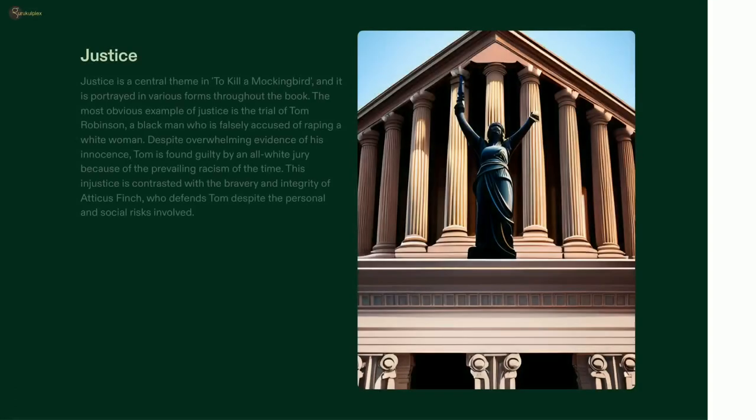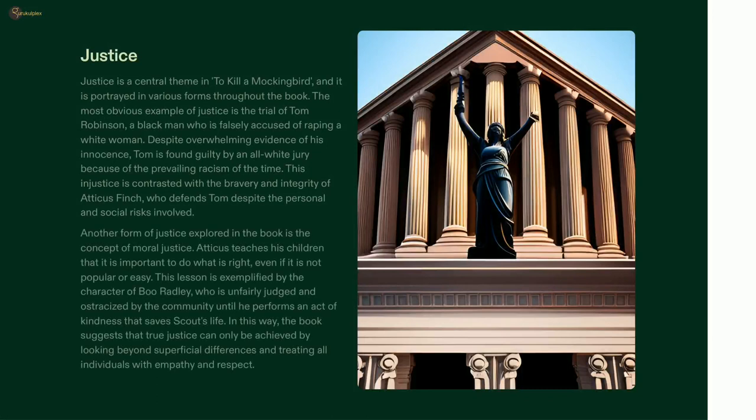Atticus Finch in To Kill a Mockingbird exemplifies the importance of justice as he defends Tom Robinson, a wrongly accused black man. Atticus teaches his children to do what is right, no matter how unpopular or difficult, and this is demonstrated in the characters of Boo Radley and Sheriff Tate, who make sacrifices to ensure justice is done. The story serves as a powerful reminder of justice in the face of prejudice and bigotry.